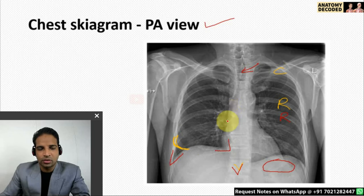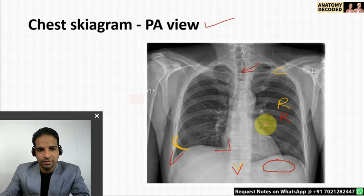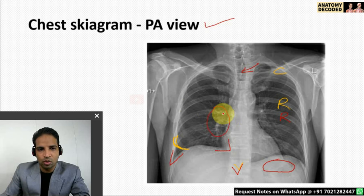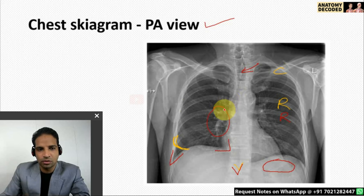In the cardiac shadow, the borders of the heart are important — structures forming the right border and structures forming the left border, which we will see in subsequent slides. In the air shadow, the hilar shadow is seen here — this region is the hilum of the lung, from which the trachea divides into the various bronchi and enters the lung. Bronchovascular markings are seen here, and at times there may be enlarged hilar lymph nodes.